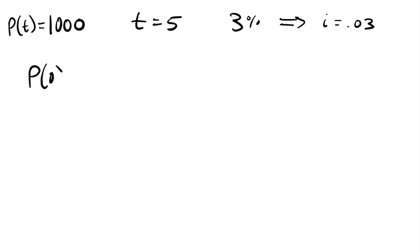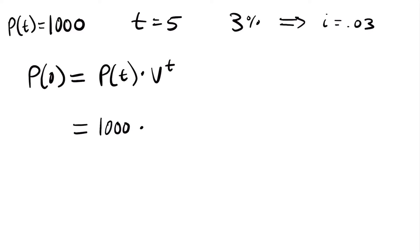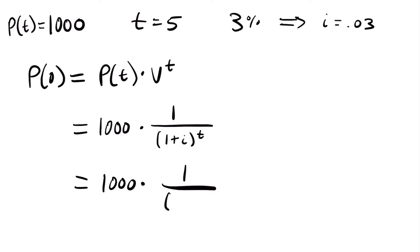The present value is equal to the value at a time in the future times our present value factor. So now plugging in what we know: this is going to be equal to $1,000 times our present value factor, which is 1 over the accumulation factor — 1 plus i to the t power. In this case we know those variables, so we write 1,000 times 1 over 1.03 to the five-year power. If we plug this into our calculator, we find that this equals $862.61.